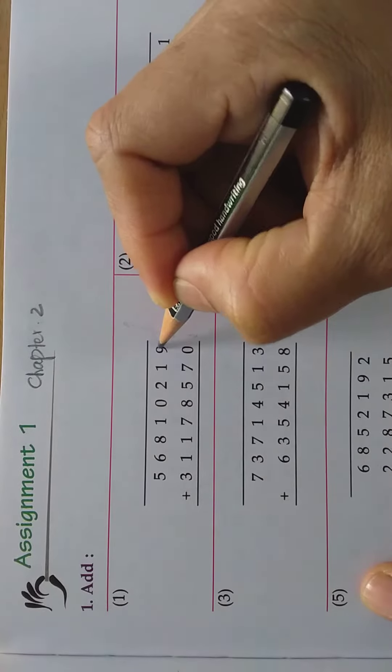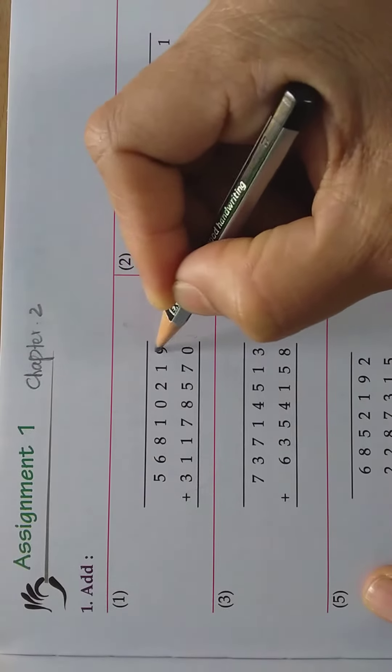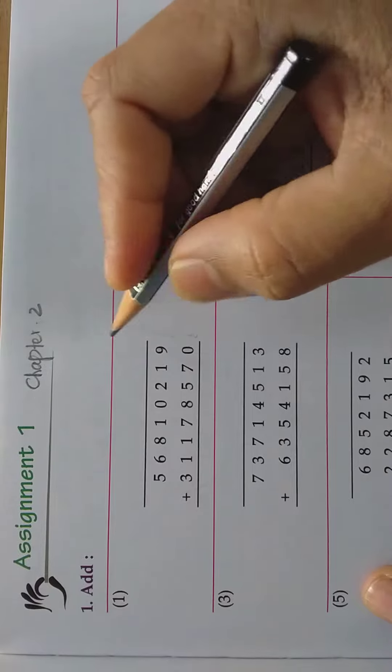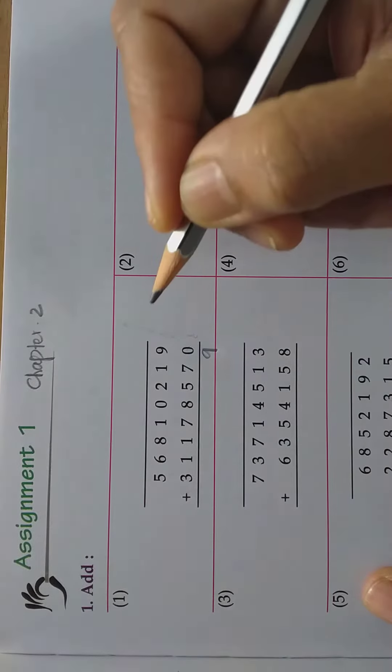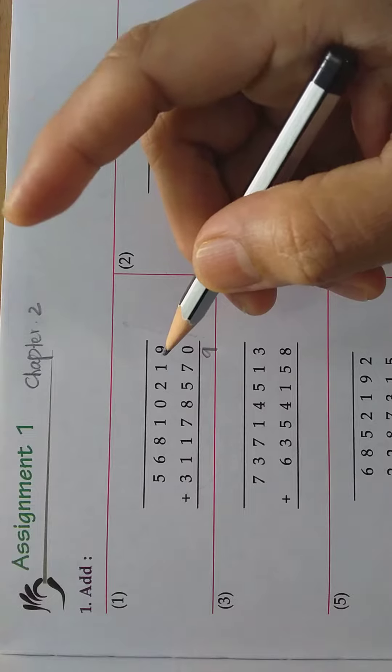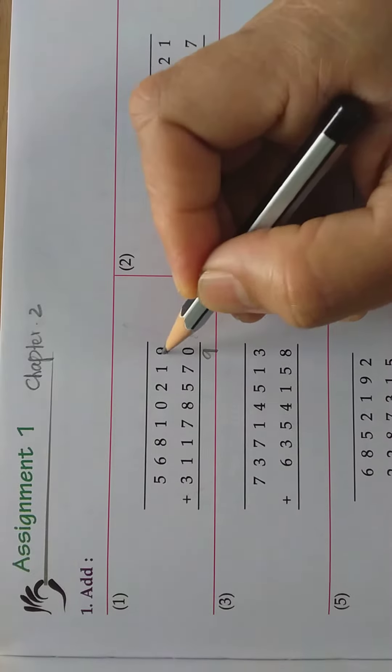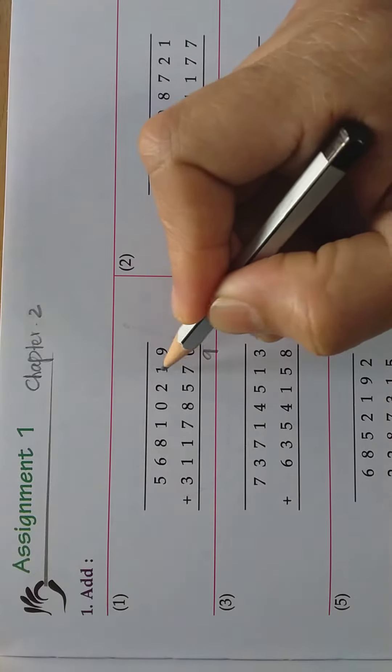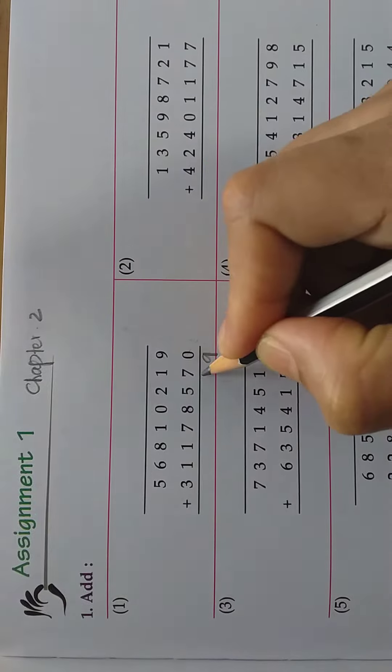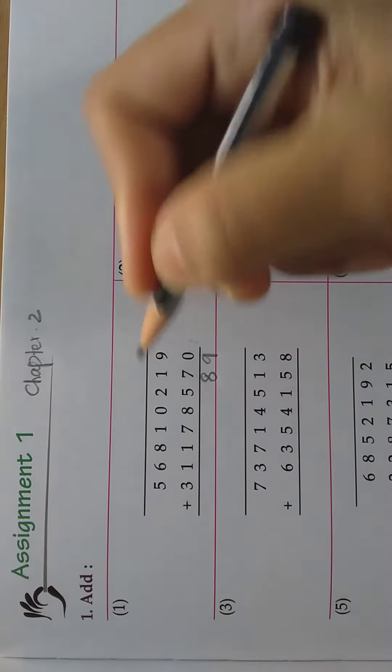Take this number 9 and you should add first these two numbers. 9 plus 0 is 9. I told you before, if you add any number to 0, the same number will come. 9 plus 0 is 9. 1 plus 7, how much? 8.